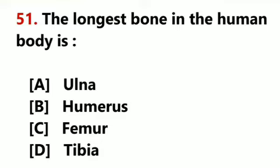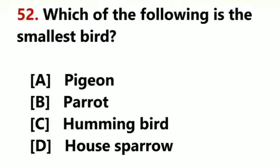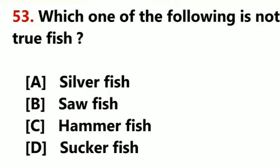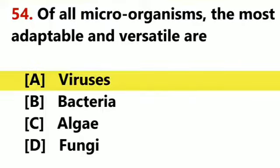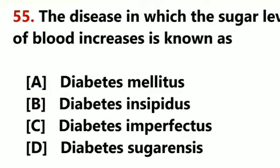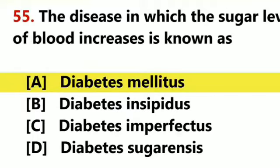The longest bone in the human body is the femur. Which of the following is the smallest bird? Hummingbird. Which one of the following is not a true fish? Silverfish. Of all microorganisms, the most adaptable and versatile are viruses. The disease in which the sugar level of blood increases is known as Diabetes mellitus.